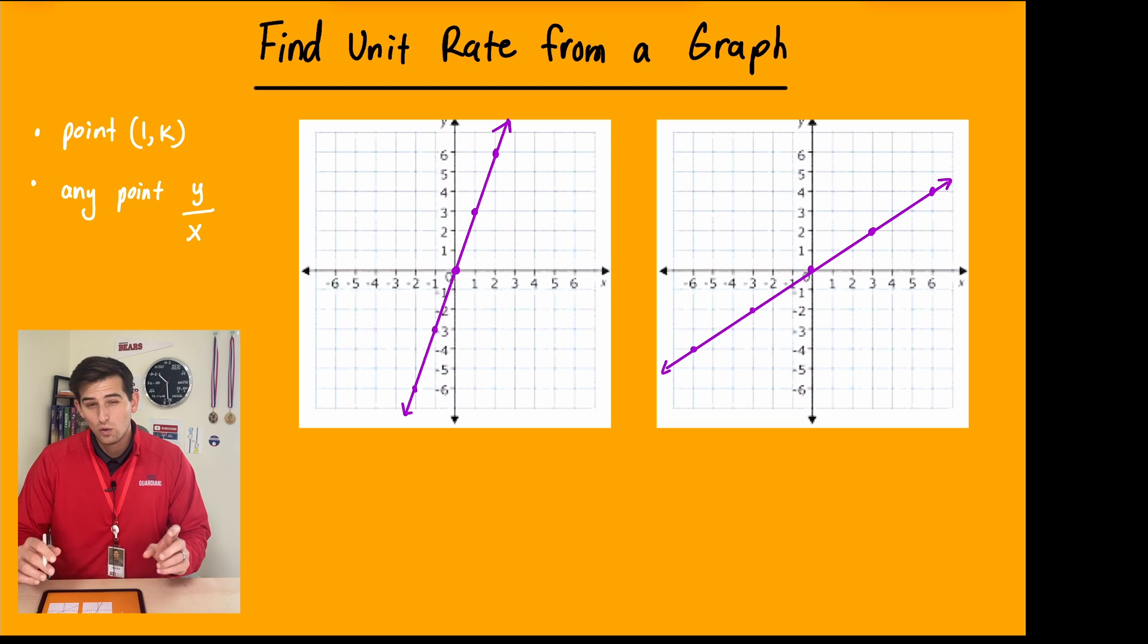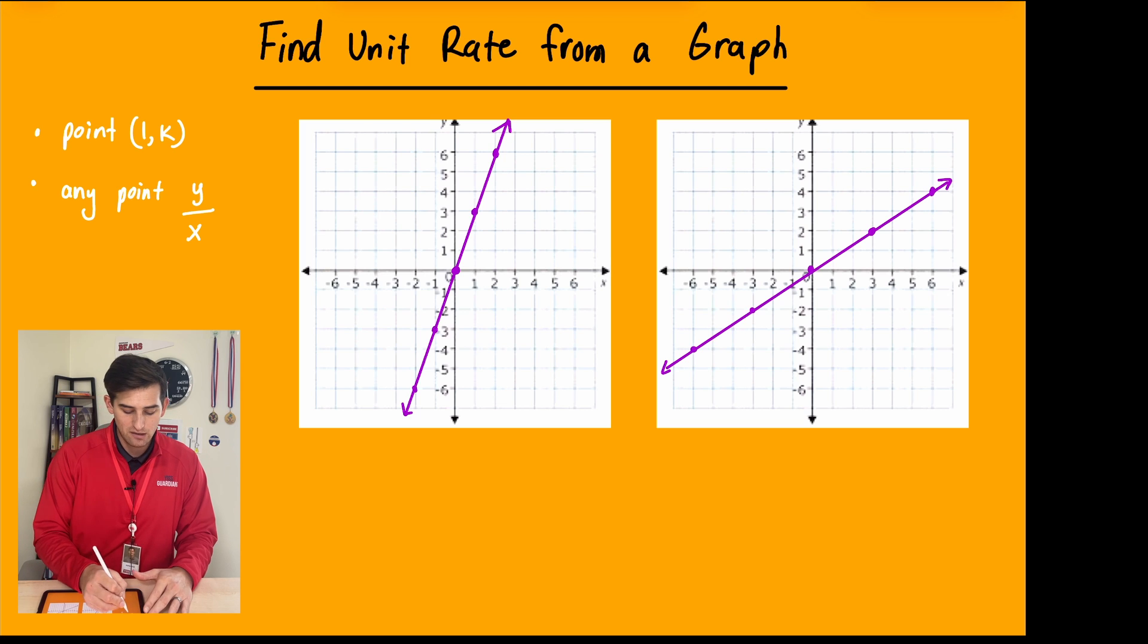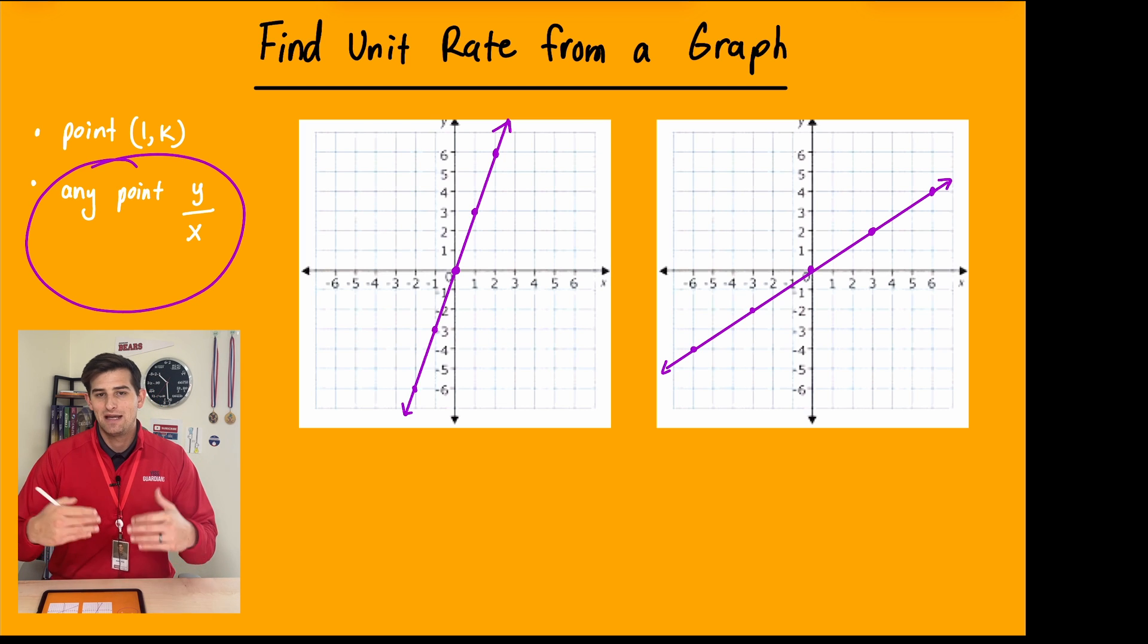Now, if we don't see that, or if perhaps we don't have a dot there, maybe our line goes through when x is equal to 1, but maybe it is a fraction. So it's not a whole number. It's not an integer. We can't exactly see it and be confident in finding out what our unit rate is just by looking at the graph. So we could potentially also take any point and just divide y by x. And the result of that, the quotient of that, would be our unit rate. All right, so let's dive in.